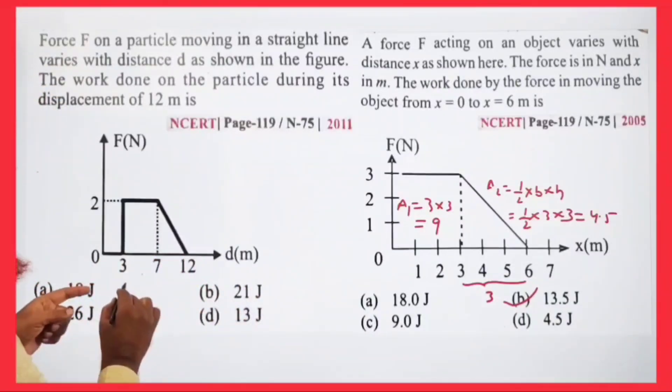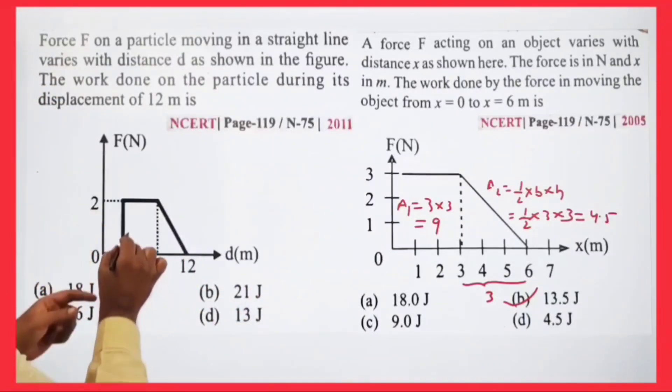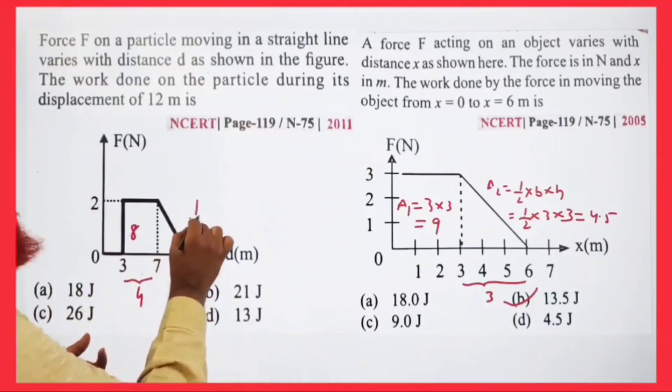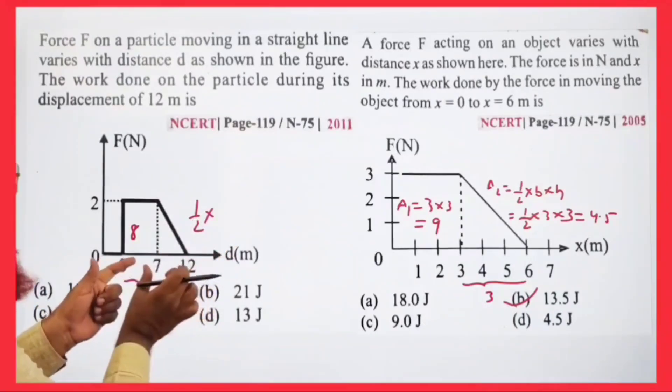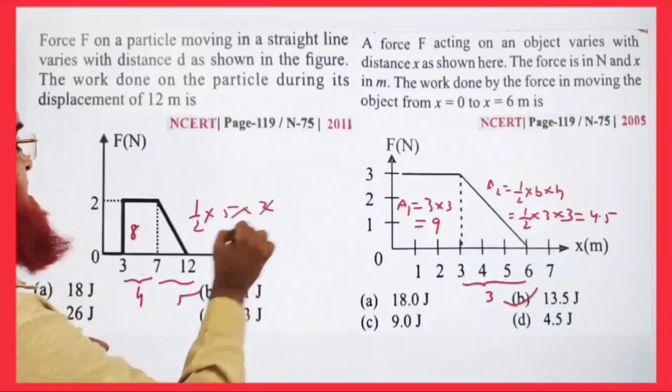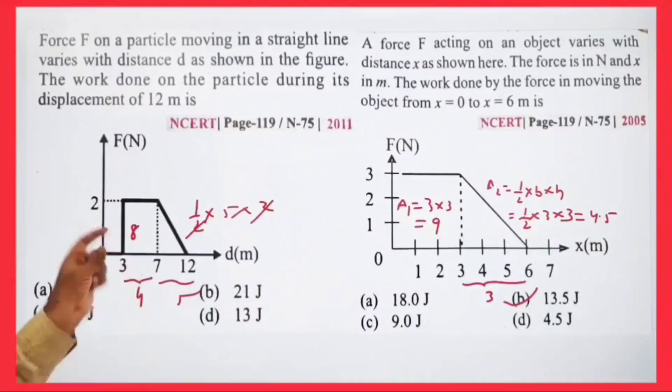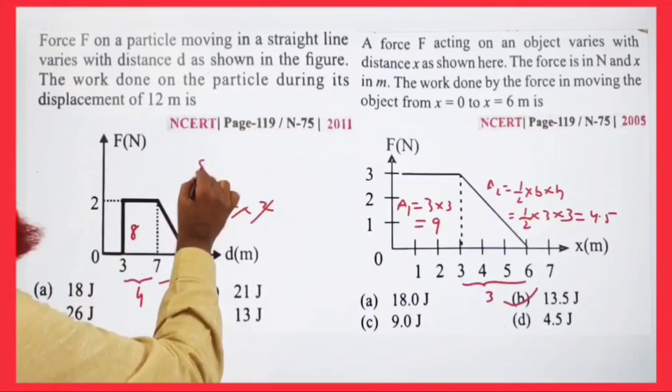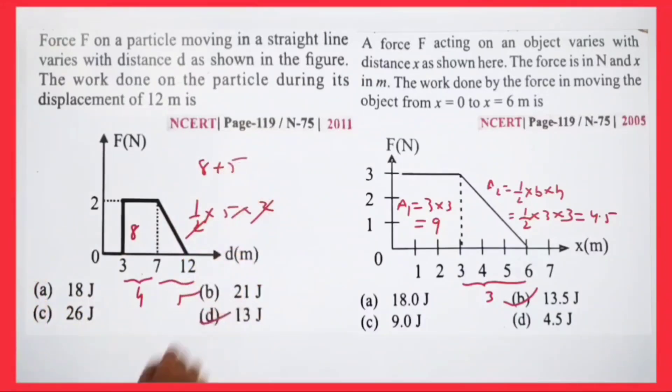Here there's also a rectangle and triangle. The rectangle is 4 × 2 = 8. The triangle is (1/2) × 5 × 2 = 5. So 8 + 5 = 13 joules. That's it.